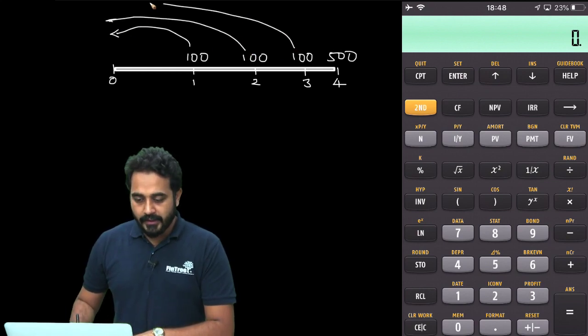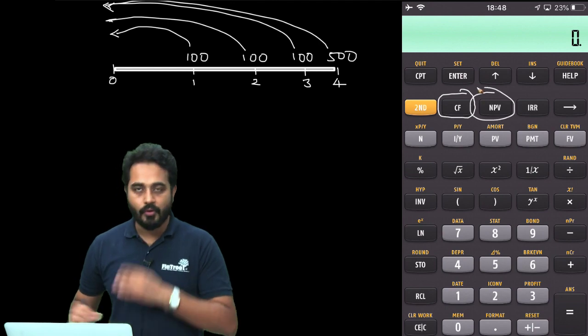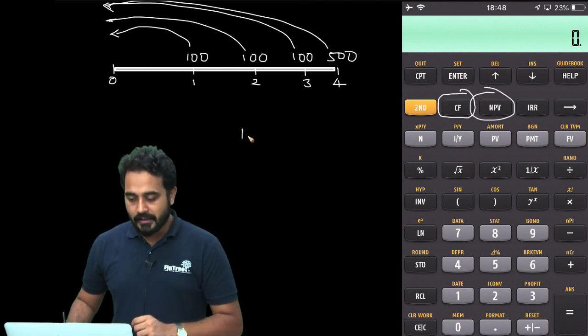So, of course, one way of doing it is you can do them individually and then add them up. Or alternatively, you can directly make use of the cash flow function and the NPV function of the calculator.